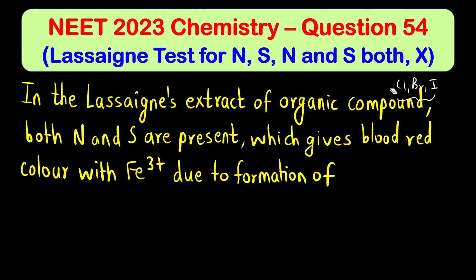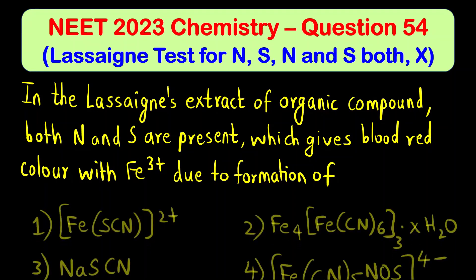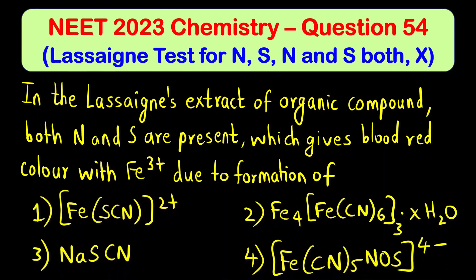The question is: in the Lassaigne's extract of an organic compound, both nitrogen and sulfur are present. Which compound gives a blood red color with ferric ion (Fe3+) due to the formation of which complex? Four options are given and we have to select the correct option.